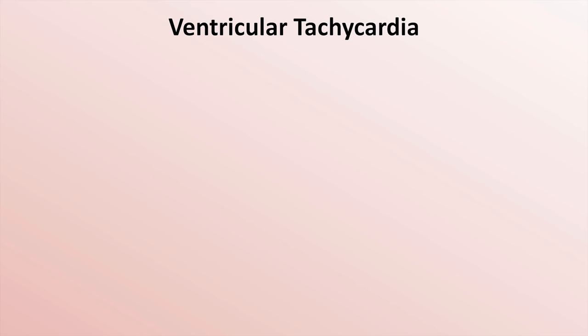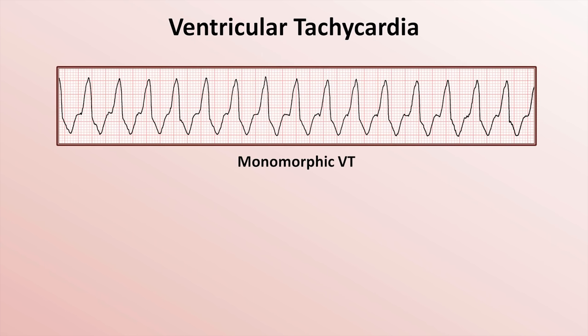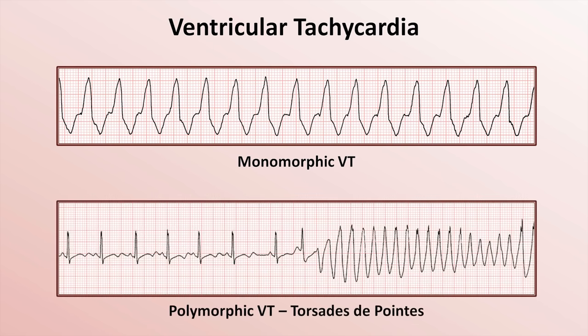Here's an example of monomorphic VT. The small bump on the downslope of the second T-wave is suspicious for a dissociated P-wave — evidence of AV dissociation. Here is a classic example of the much rarer polymorphic VT, specifically torsade de pointes, which is almost universally caused by a prolonged QT interval.